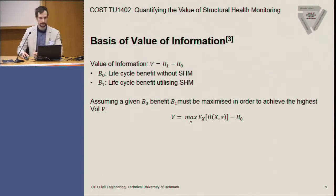This is part of a decision process, so that means those two values or benefits, B1 and B0, should be the maximum you can achieve.